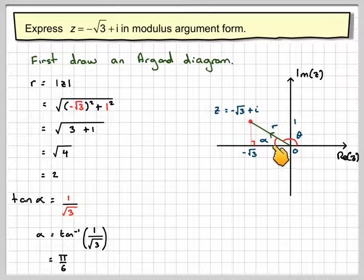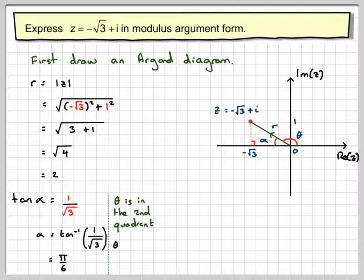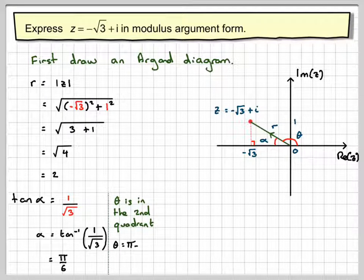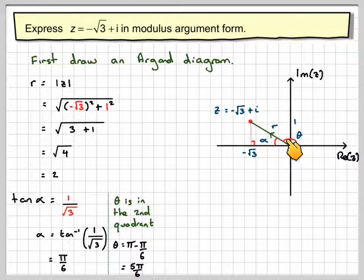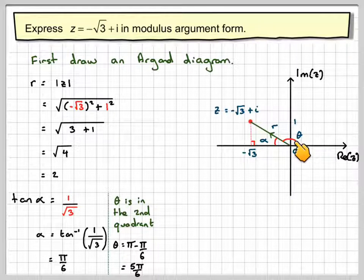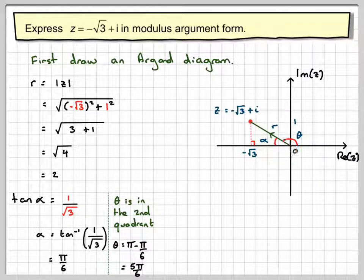So if that angle there is pi by 6, then theta is in the second quadrant, therefore we need to do pi minus pi by 6, which is 5 pi by 6, because the argument is actually this angle here. Remember, the argument is defined from 0 to pi and then from 0 to minus pi. So that gives 5 pi by 6.